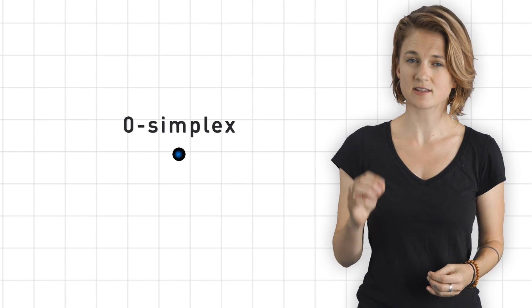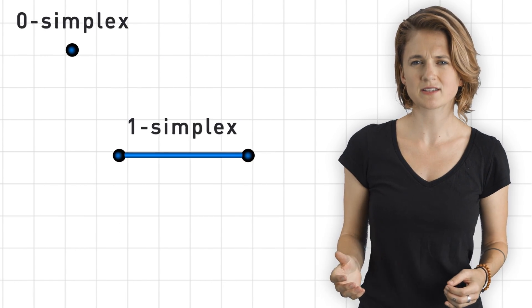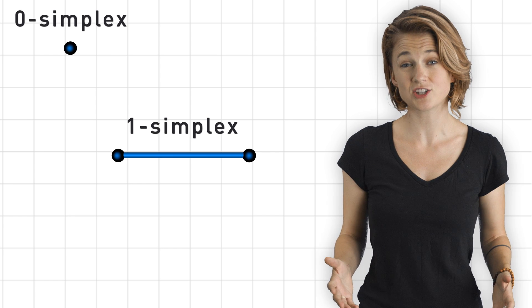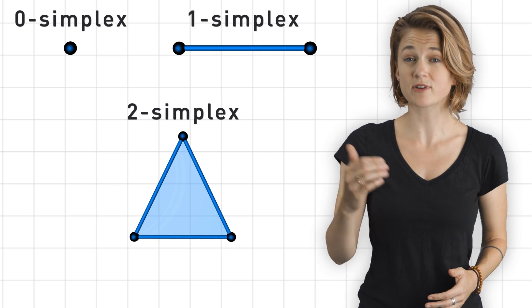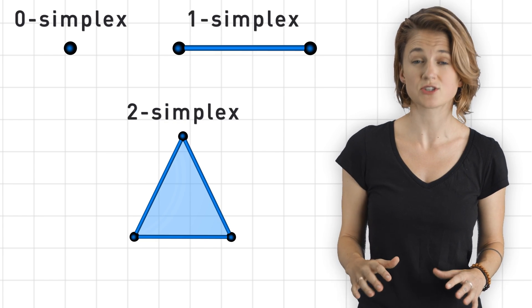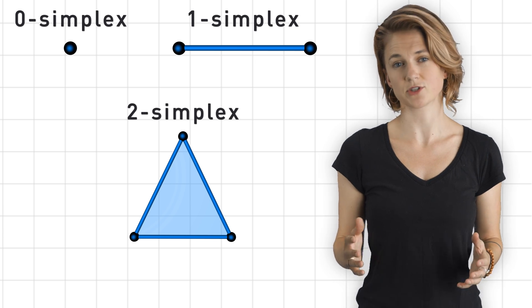A zero simplex is a single vertex. A one simplex is two vertices connected by an edge. A two simplex is three vertices connected pairwise by edges with a single face, in other words, a triangle.